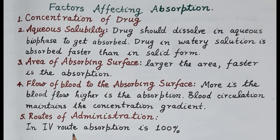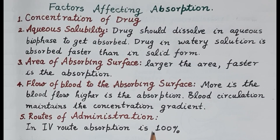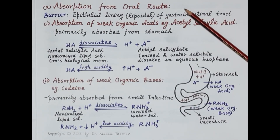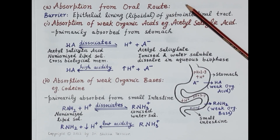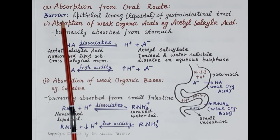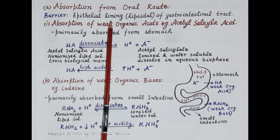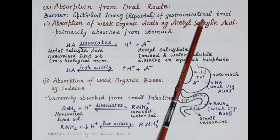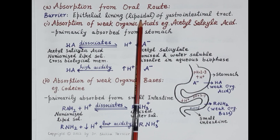Fifth is a very important parameter: the route of administration. With the intravenous route, a drug is injected directly into the systemic circulation, so absorption is 100%. Now let's discuss absorption from the oral route. The oral route is also called the enteral route — enteral refers to the gastrointestinal tract (GIT). Once the drug is swallowed it reaches the GIT, and must pass across the wall of the GIT. The first barrier is passage through the epithelial lining, which is lipoidal — made up of phospholipids.